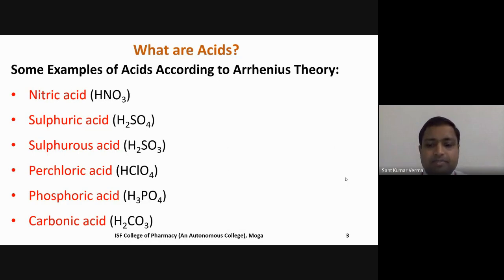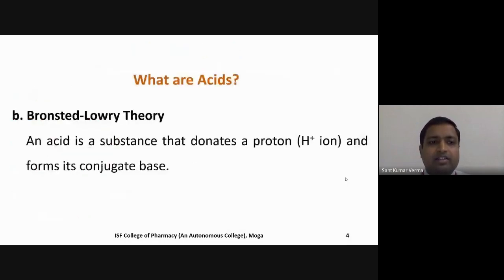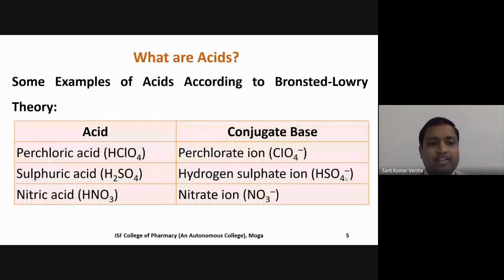The second definition is according to Brønsted-Lowry theory: an acid is a substance that donates a proton (H⁺) and forms its conjugate base. For example, perchloric acid can donate a proton and form its conjugate base. Nitric acid can donate a proton and form the nitrate ion. According to Brønsted-Lowry, an acid forms its conjugate base and a base forms its conjugate acid — the conjugate base concept was given by Brønsted and Lowry.